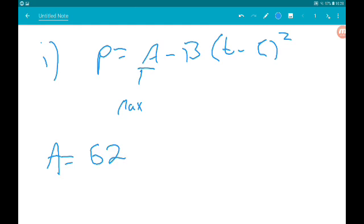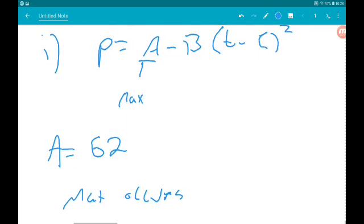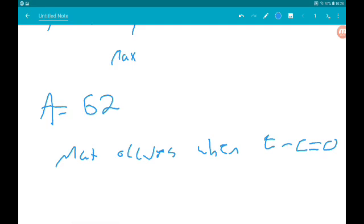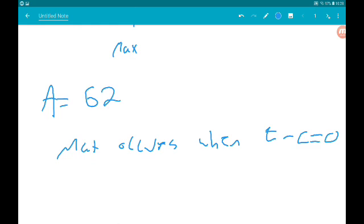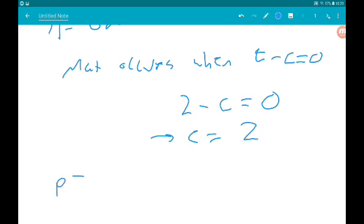Now, we also know that that happens when t is equal to 2. The maximum occurs when the bracket is equal to 0. So we know then it happens also when t is equal to 2. So 2 minus C is equal to 0. Therefore, C is equal to 2.